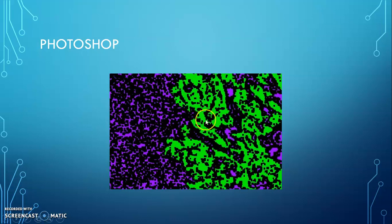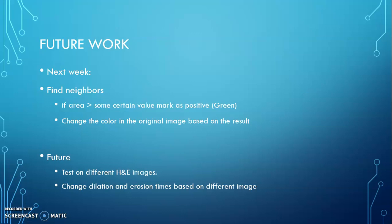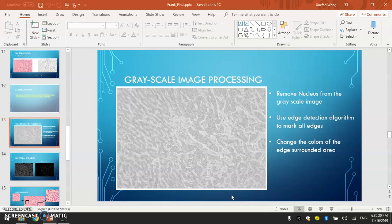So in the original image, I will probably only mark the irregular ones as green. And next week, I will do what I said before. And in the future, probably I can test on different H&E images to see if my algorithm is also right. And I can also change the dilation and erosion times based on different images. Because on this image, I dilated it three times and then erode it three times, and probably I can change the numbers to see which way is the best result. Okay, thank you.